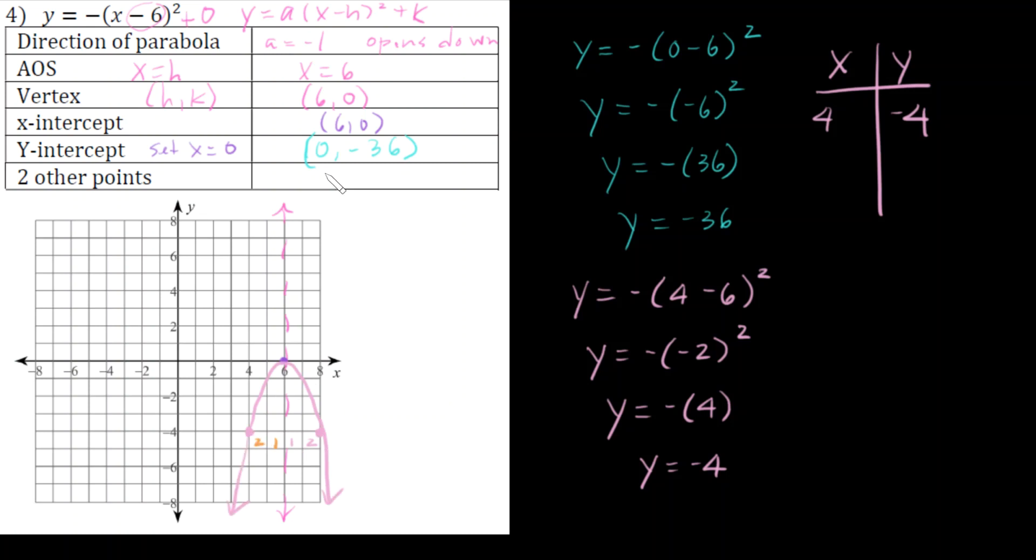So the two points that I found were four negative four and eight negative four. And that's my parabola. Good job guys, bye.